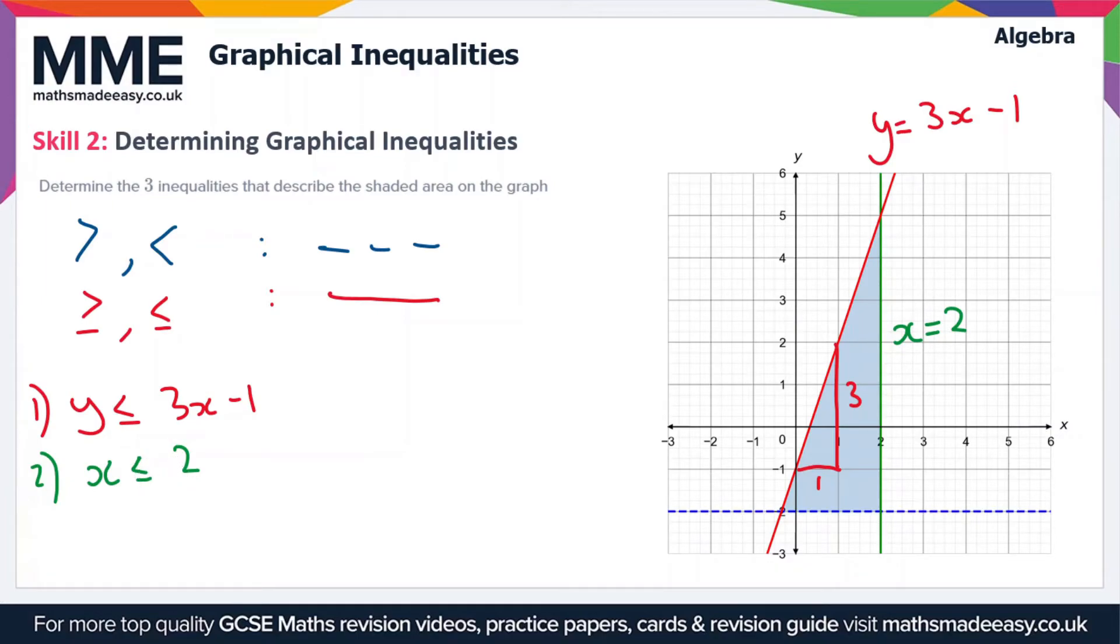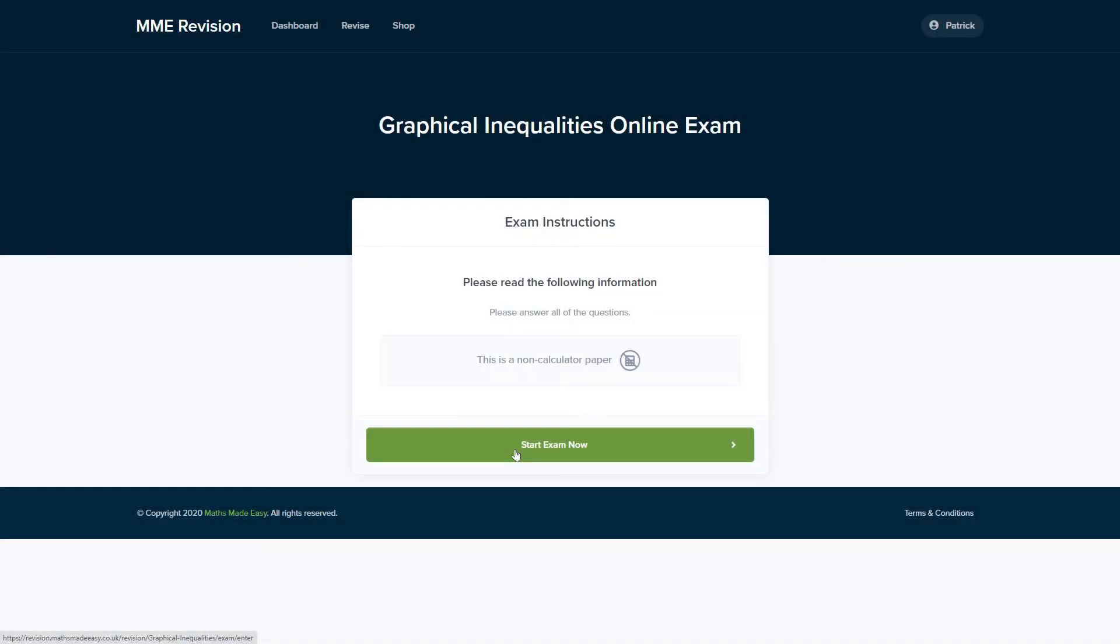Finally, let's look at the blue line. This is a dashed line running through y = -2. The inequality is y > -2. Why? The shaded area is above the line, and it's a dashed line, so it's a strict inequality.